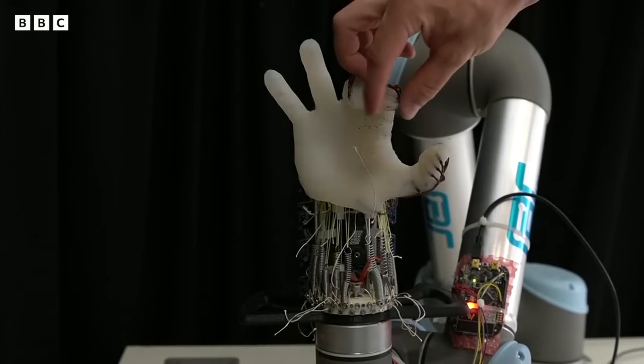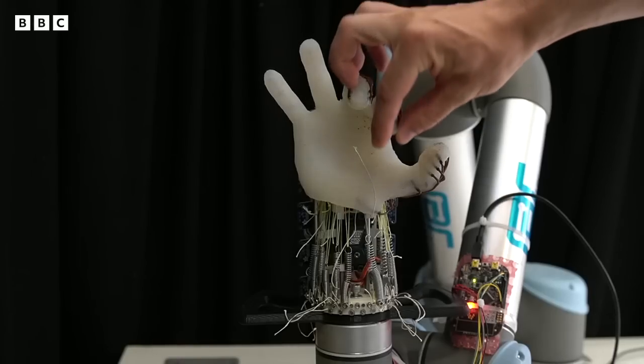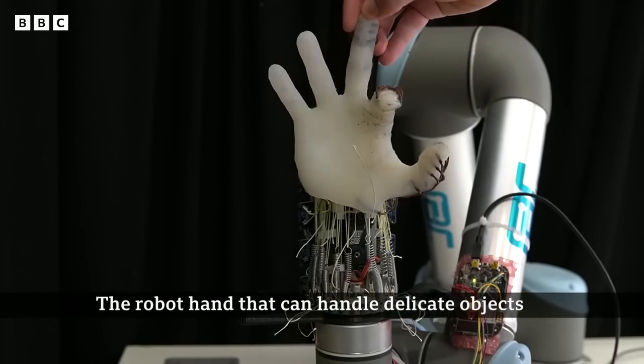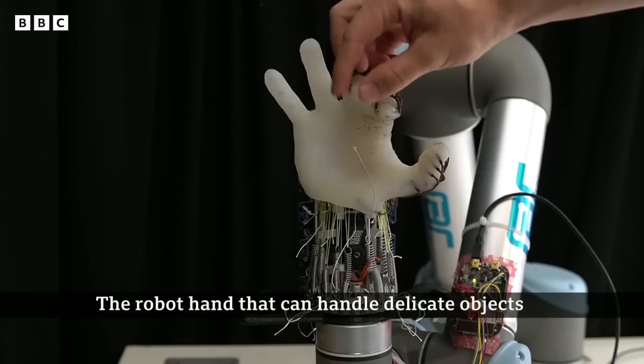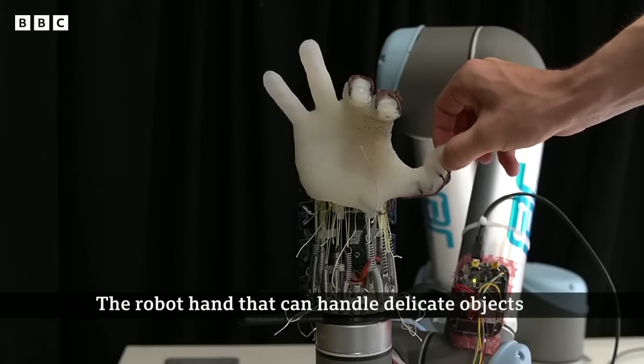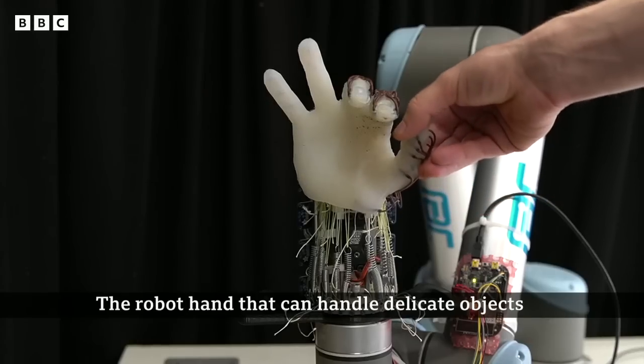I talked about the practical uses of it in a moment, but I think I'm right in saying that you tried 14 different objects. It managed to grasp 11 of them. What in particular did it seem to struggle with?